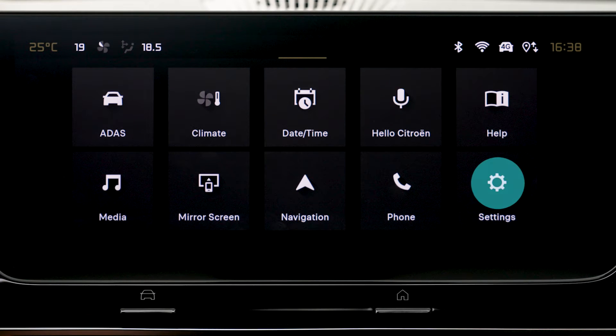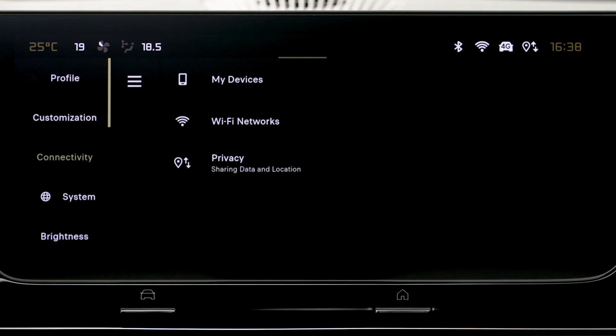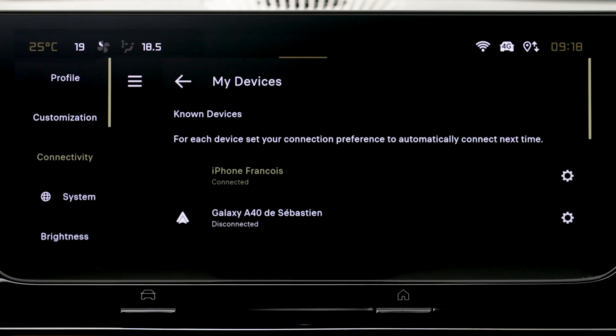Press on the Settings application. In the list, select the Connectivity tab. Select Devices to display the device you wish to connect to Apple CarPlay.